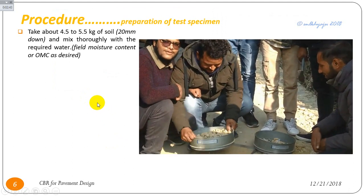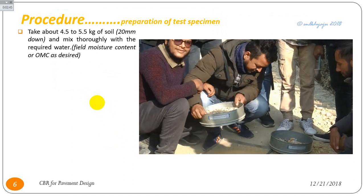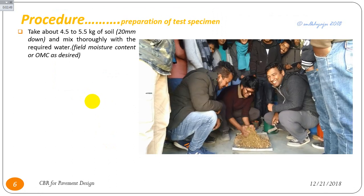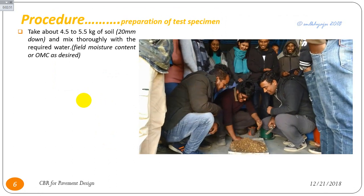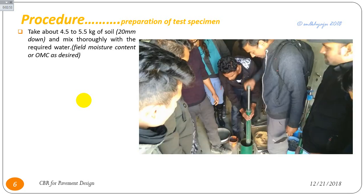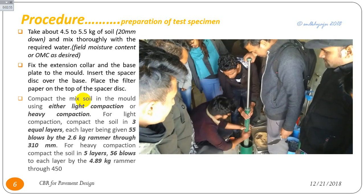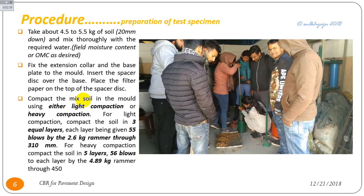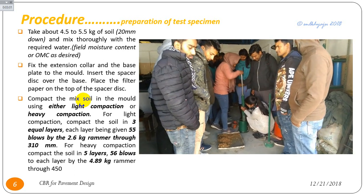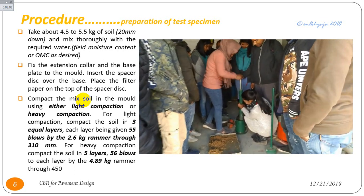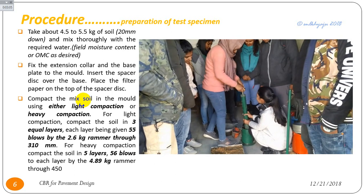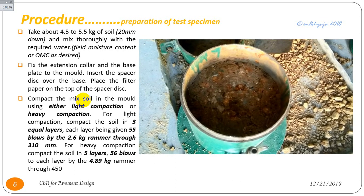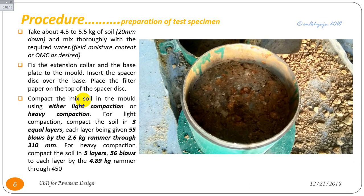Take about 4.5 to 5 kg of subgrade soil — passing 20 mm and retained on 4 mm — and mix thoroughly with the optimum moisture content (OMC). Heavy compaction is used: the given soil sample is compacted in 5 layers, each layer compacted with a rammer of 4.89 kg dropped from 450 mm height, with 56 blows per layer.